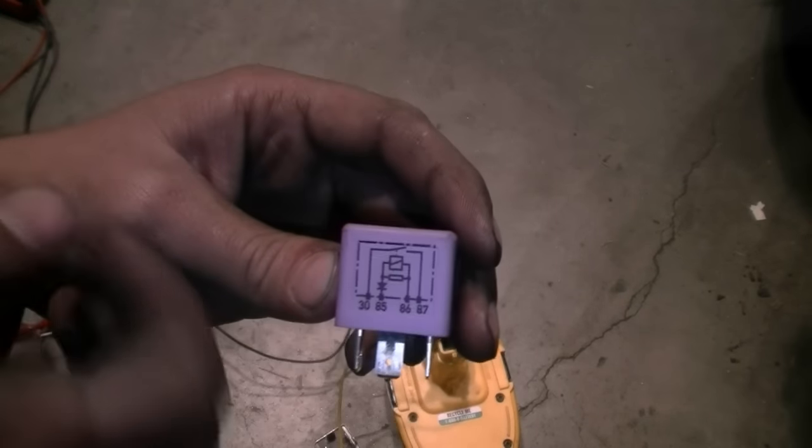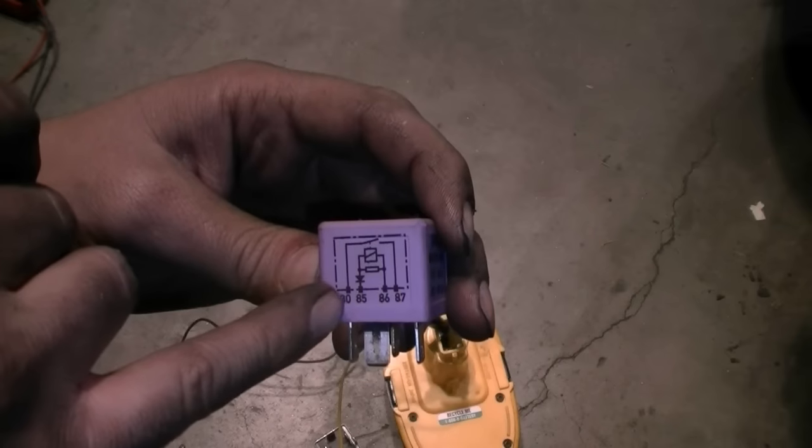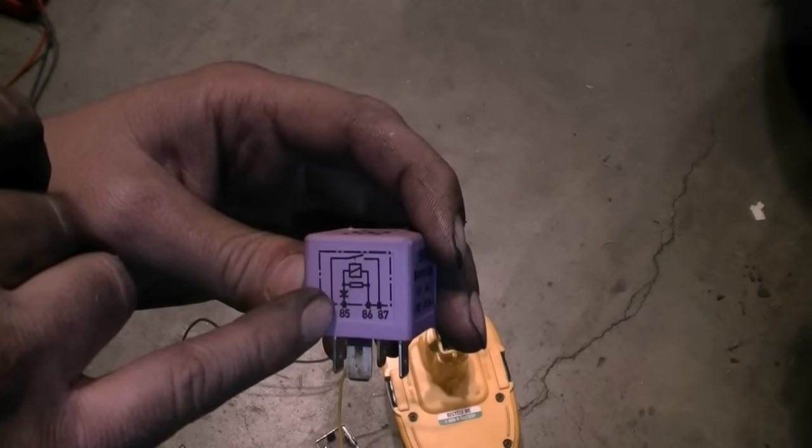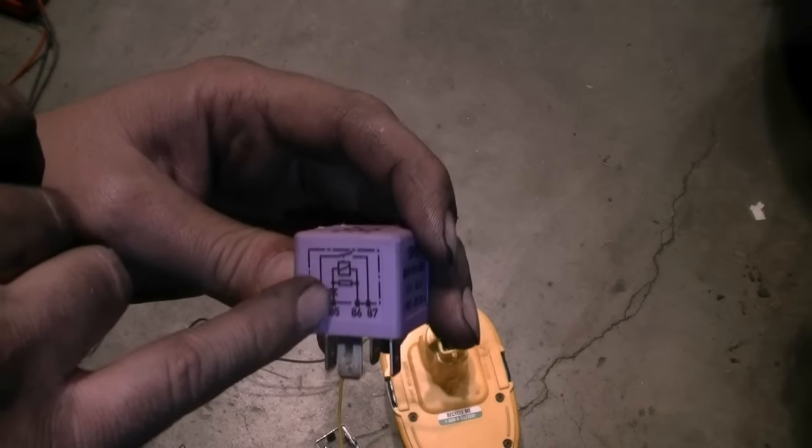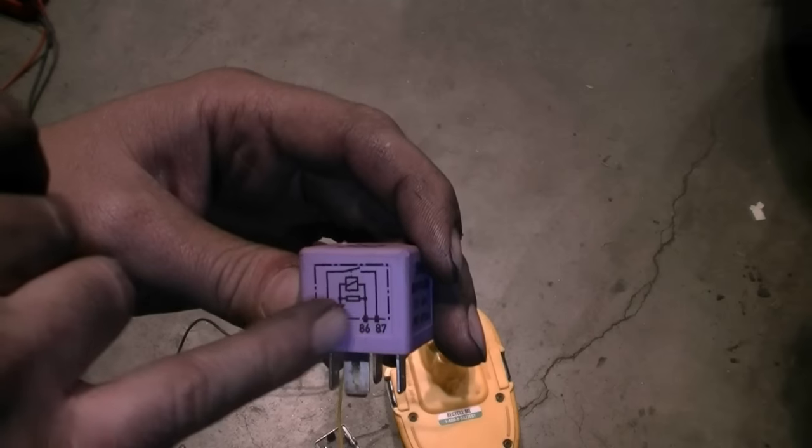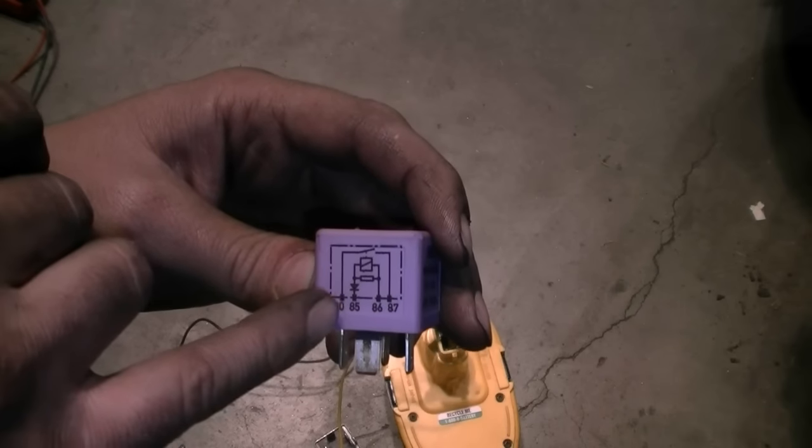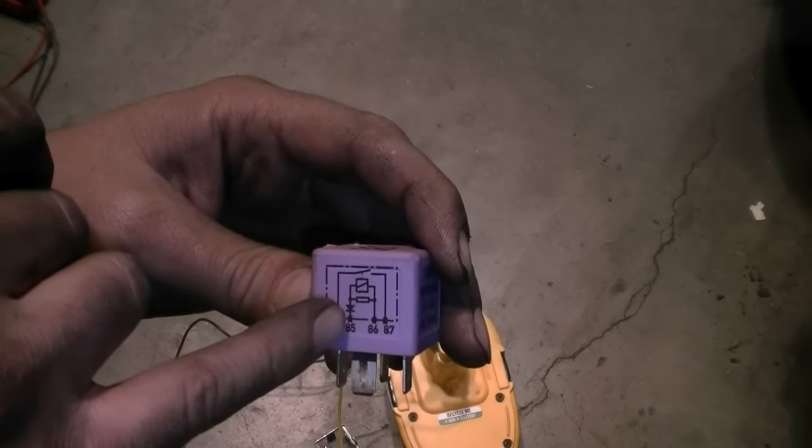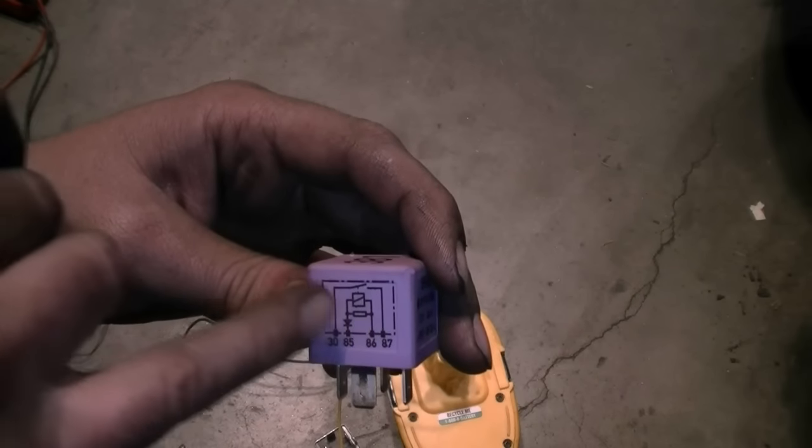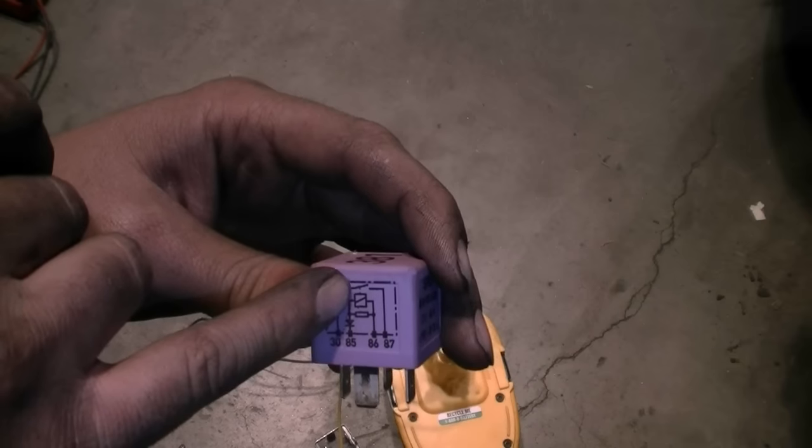So back to the diagram again, this basically tells you whenever the system between 85 and 86 becomes energized, which basically means whenever power or ground is supplied to one of these, it's different in every car. Basically when this system becomes complete, this circuit becomes complete.